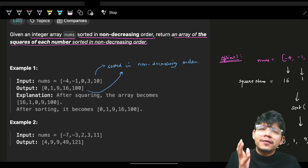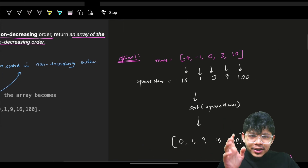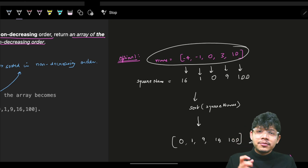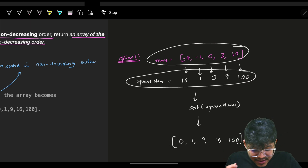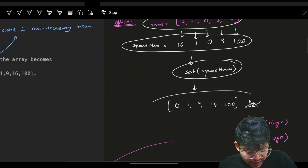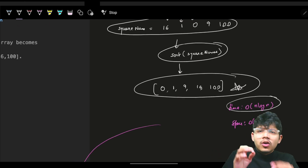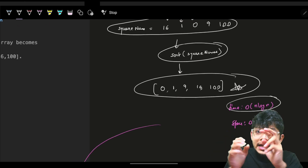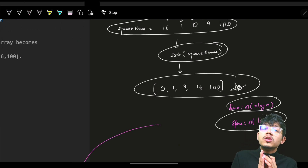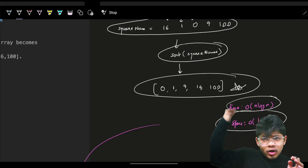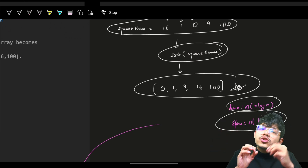One very obvious way you must have surely thought of: take the array nums, square all the values, then simply sort them and you get the answer. That's O(n log n) time — O(n) for squaring and O(n log n) for sorting — so total time is O(n log n). Space is O(log n) for Java and C++, and O(n) for Python due to sorting complexity.